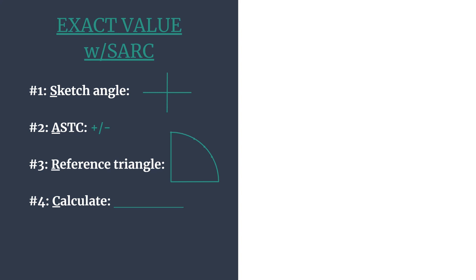The A helps us think ASTC, which helps us decide the final sign of our exact value. R, we'll find the reference triangle and the coordinates to perform the calculation, the C. So we'll calculate our trig ratio, and we're going to do this with the secant of 11π over 4.